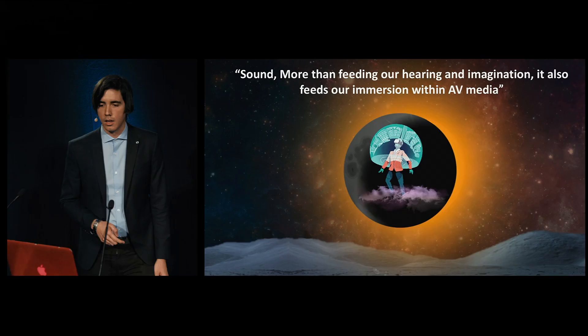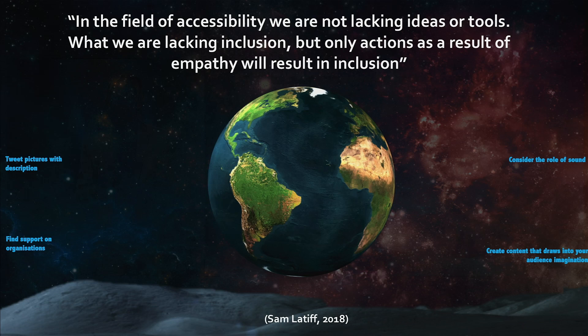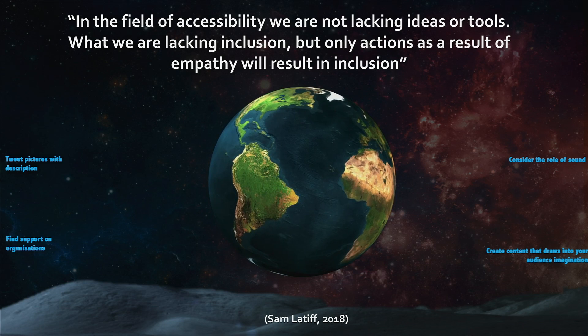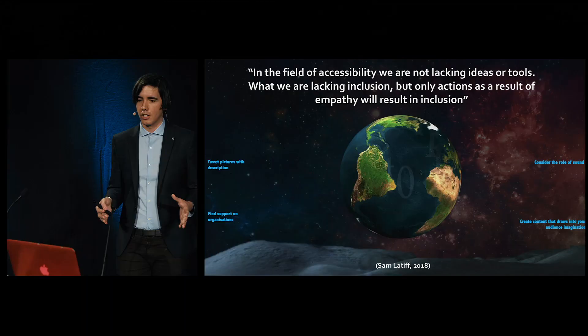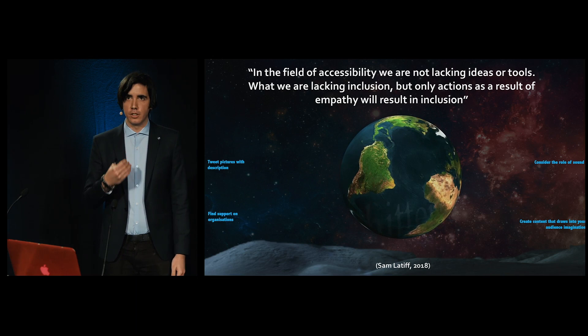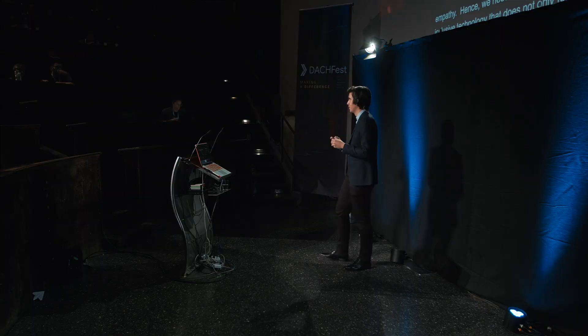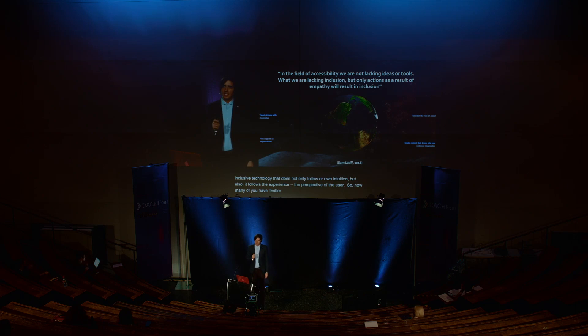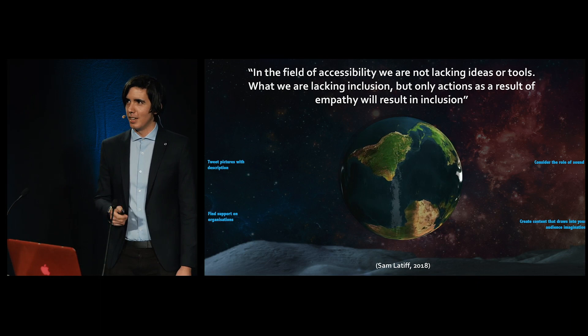In the field of accessibility, we are not lacking ideas or tools — what we are lacking is inclusion. But inclusion is only accomplished when actions are a result of empathy. Hence, we need to start breaking the standards and apply inclusive technology that doesn't follow only our own intuition, but also follows the perspective of the user. So how many of you have Twitter? I have a challenge for you: next time you publish a picture, use accessibility to describe it.